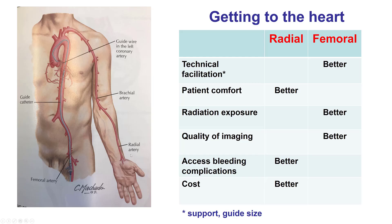There are essentially two access sites used for angiography and PCI: either the radial access or the femoral access, and each one has advantages and disadvantages. The femoral access is technically easier to perform, with less radiation exposure and better quality imaging due to better engagement, whereas the radial is superior in terms of patient comfort — the patient can get up and walk immediately after — with less access site complications and less cost, mainly due to same-day discharge.